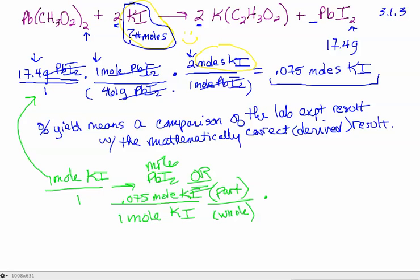This would be my part out of the whole. And I do that division and multiply it times 100 to get percent. And my answer would be 7.5%. Percent yield is covered on ThinkWell on section 3.3.5. Okay, if you want to look that up again.